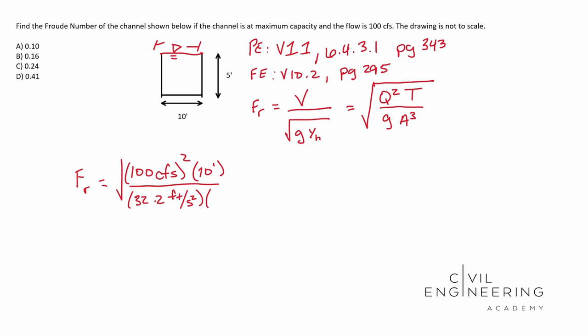And then we need to multiply that by our cross-sectional area cubed. So our cross-sectional area is going to be 5 feet times 10 feet, 50 square feet. We need to cube it. So we're going to go 50 feet squared, cube that guy. And then we square root all of that. And that will give us our Froude's number.